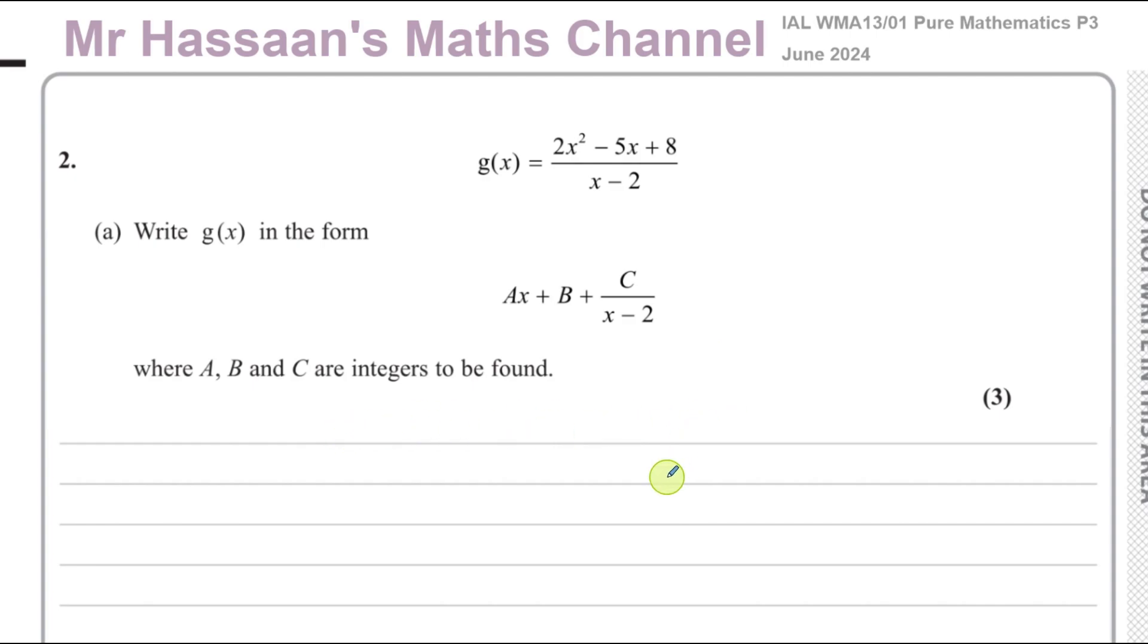First of all, we've got this algebraic fraction, g(x) equals 2x squared minus 5x plus 8 over x minus 2. And we want to write this in the form Ax plus B plus C over x minus 2.